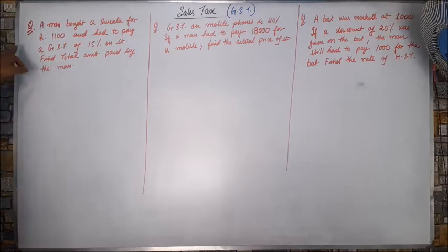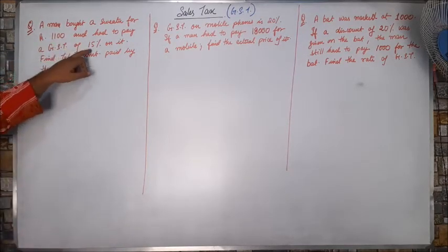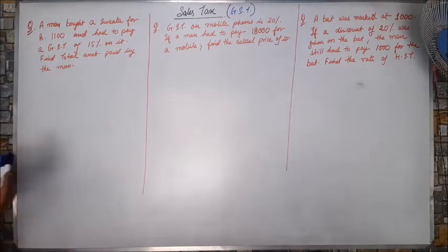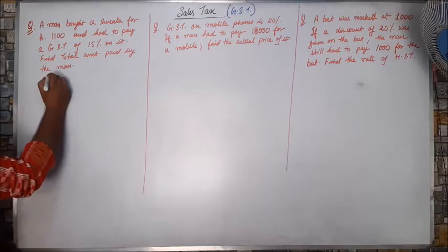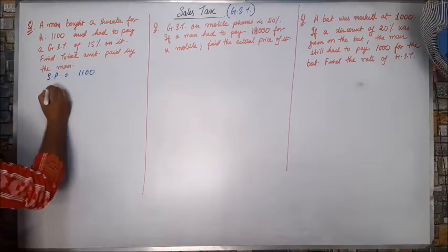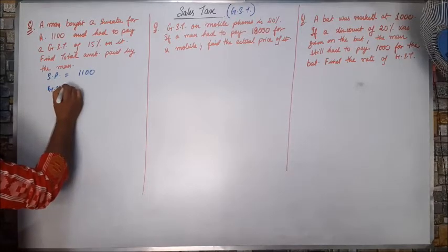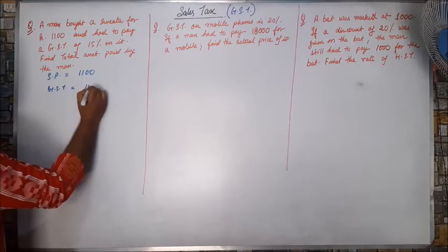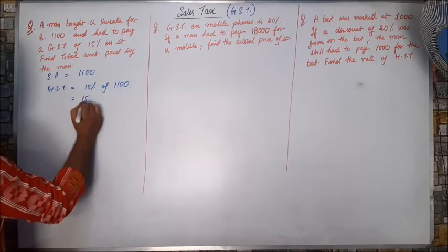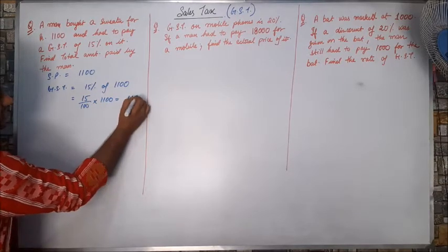The first question: a man bought a sweater for Rs. 1100 and had to pay a GST of 15% on it. Find the total amount paid by the man. So here, the selling price, the SP was 1100.